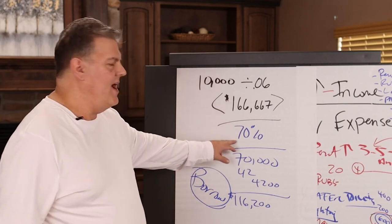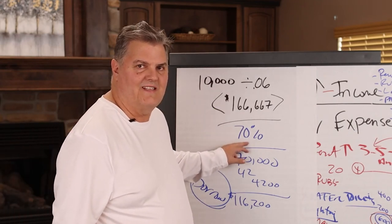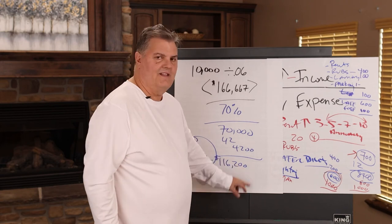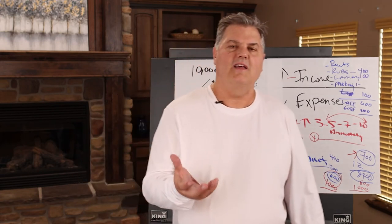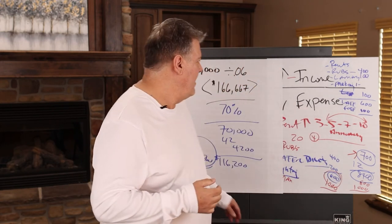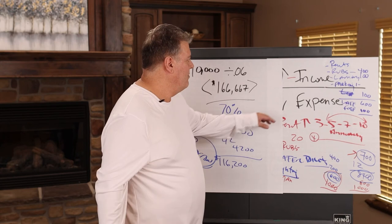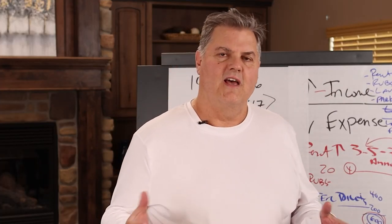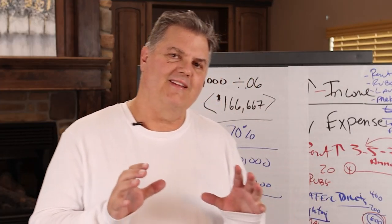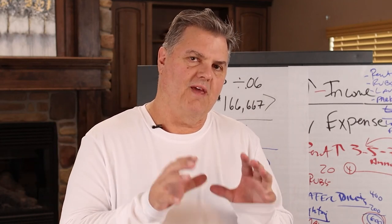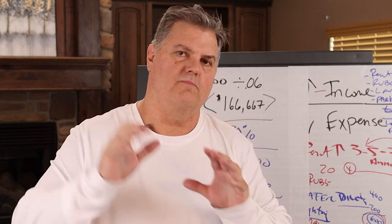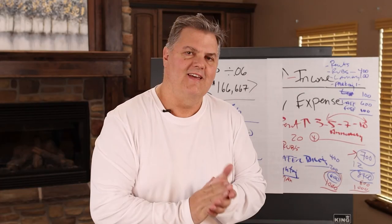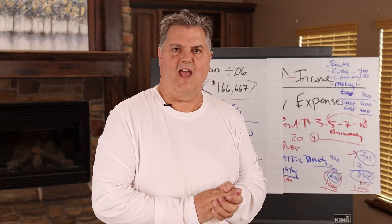If I can borrow 70% of that from the bank — which I usually can — that gives me $116,200 in money I could borrow through a cash-out refi, by a simple rent increase that was absorbable by the tenants because I'm paying attention to my property and keeping the cash flow moving towards market rate. This is what goes on every day.